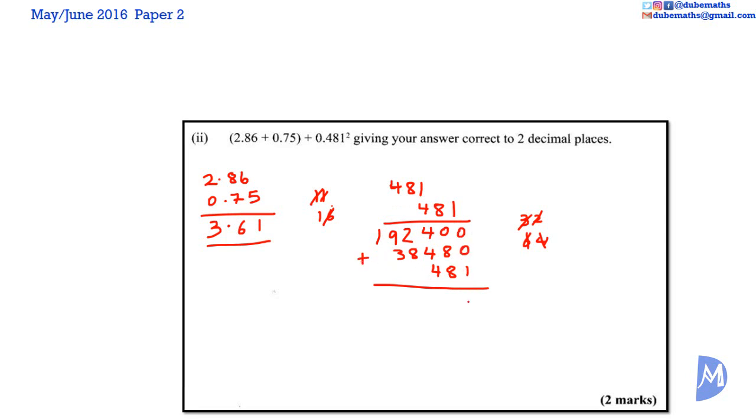1 plus 0 plus 0 is equal to 1. 8 plus 8 is equal to 16. 1 plus 4 plus 4 plus 4, 13. 8 plus 2 is 10, plus 1 is 11. 1 plus 9 is 10, plus 3 is 13.